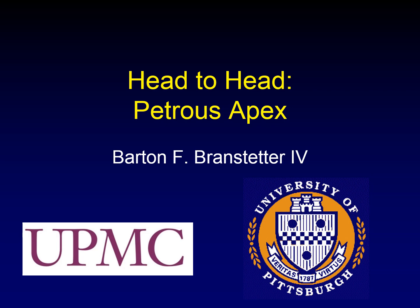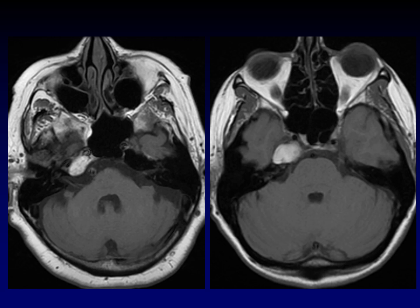In the head-to-head lectures, I show you pictures from two different patients with two different diseases that look somewhat alike. Your job is to pause the video when I'm showing the pictures and see if you can figure out what the two diseases are. Here are two different patients with axial T1-weighted images that show a hyper-intense lesion in the petrous apex. Here's where you should pause the video and see if you can figure out what each of these lesions are. They are two different diseases.